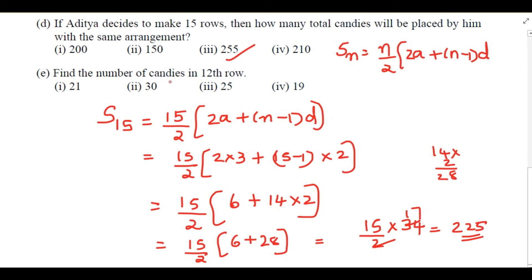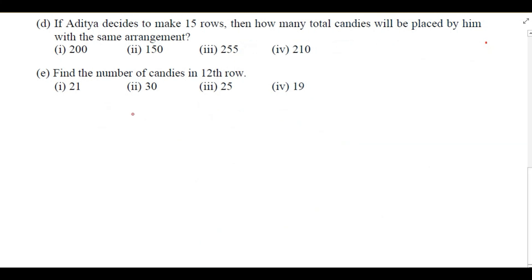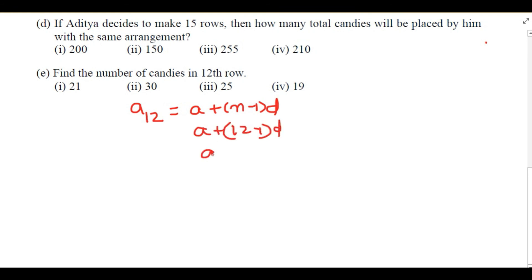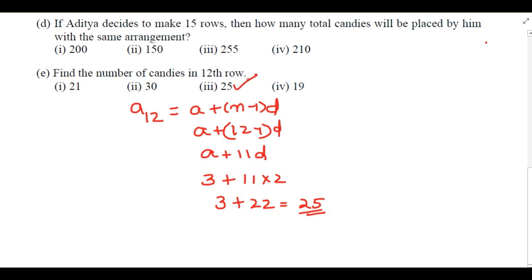The last question: find the number of candies in the 12th row. Using aₙ = a + (n-1)d: a₁₂ = a + 11d = 3 + 11×2 = 3 + 22 = 25. So the number of candies in the 12th row is 25.